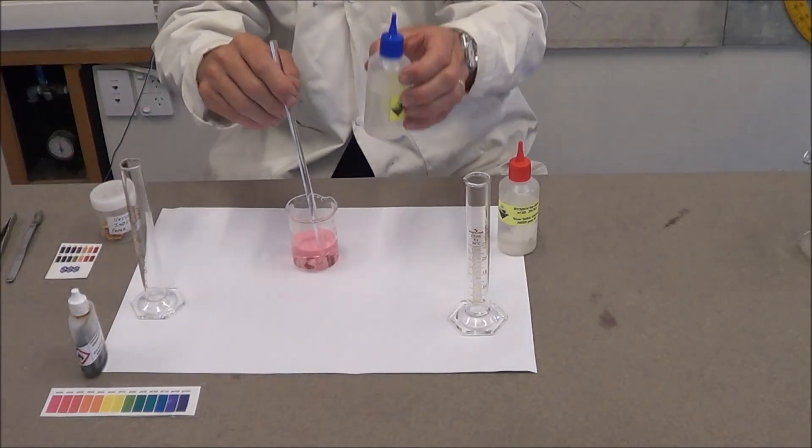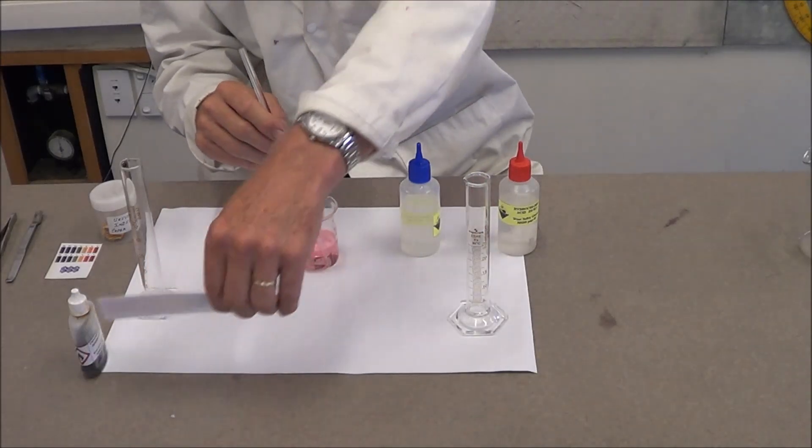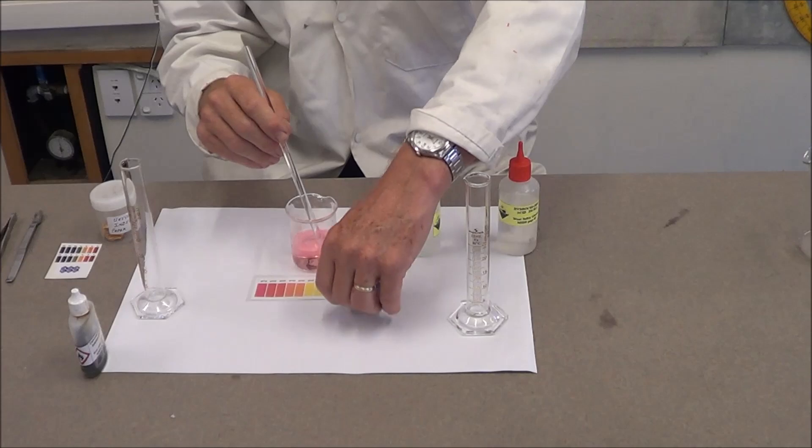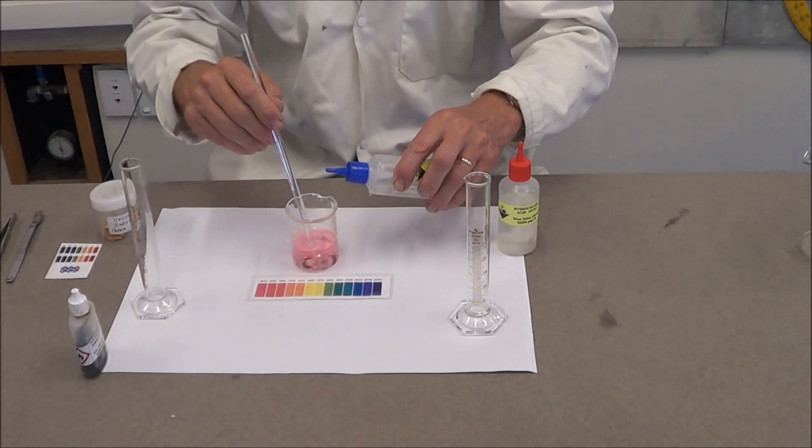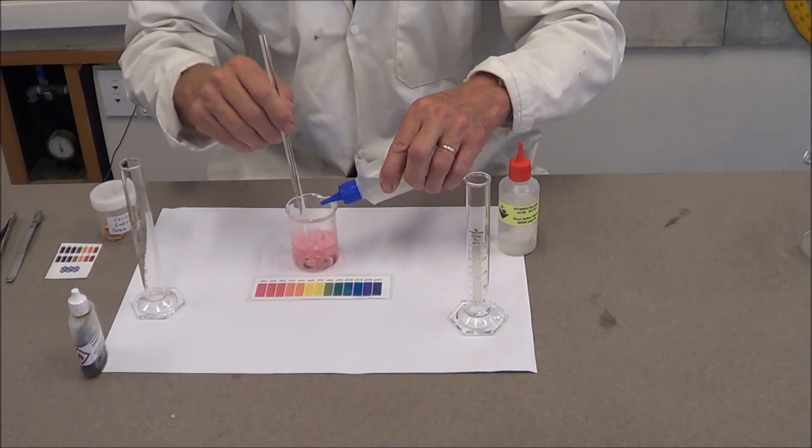We then add sodium hydroxide gradually, a drop at a time, until we reach the pH of 7, in which case all the acid will be neutralized and hopefully there will be no extra sodium hydroxide added.